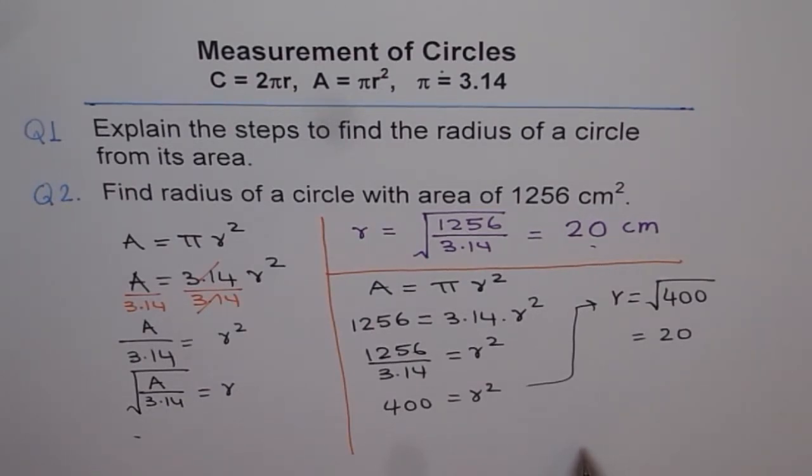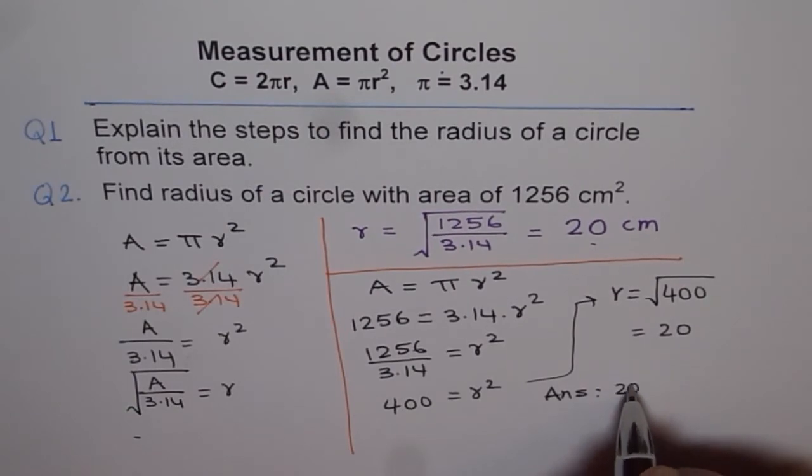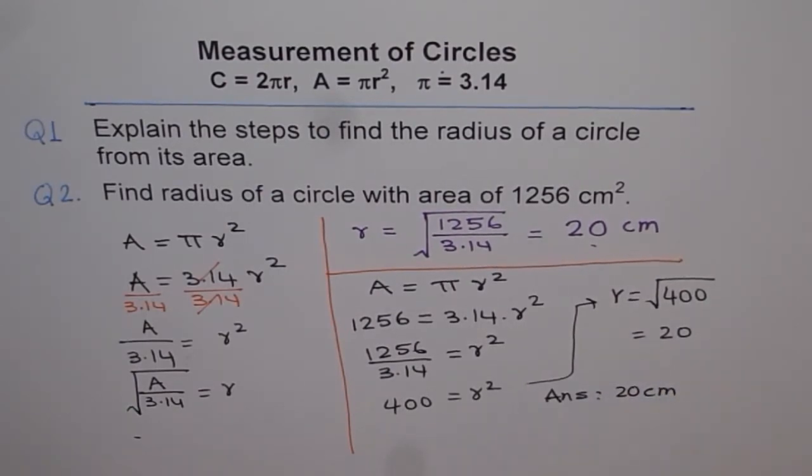So follow these steps to find radius if the area is given to you. We can now write down the answer. That answer is 20 centimeter is the radius of the circle with an area of 1256 centimeter square. Thank you.